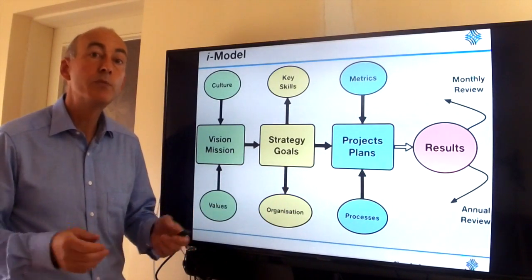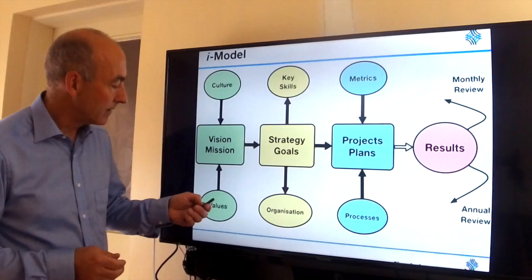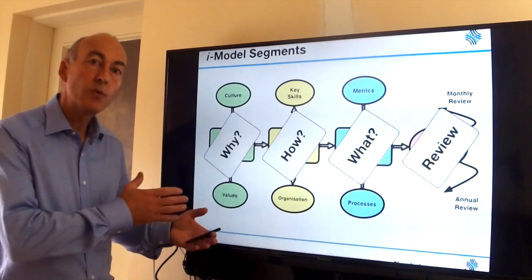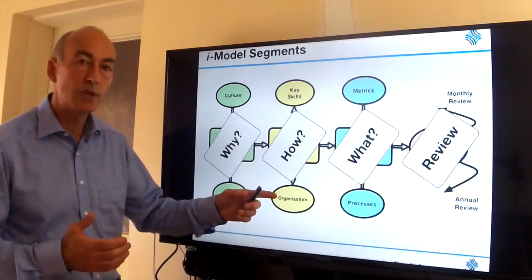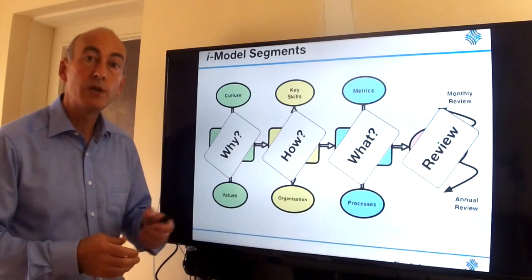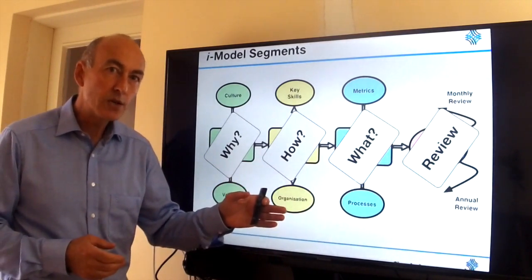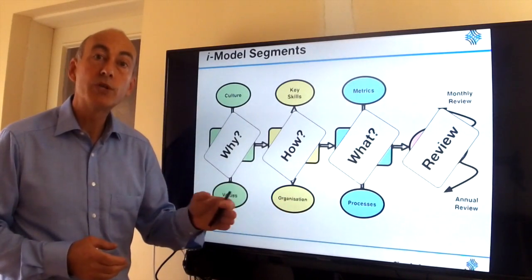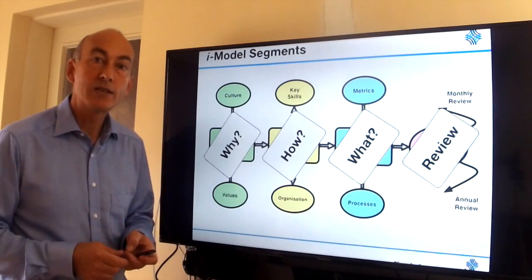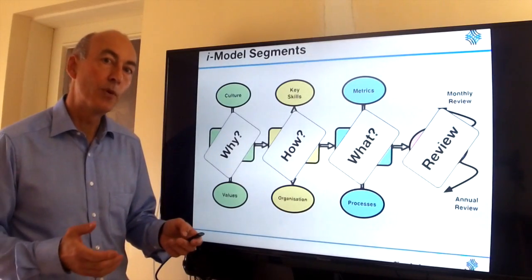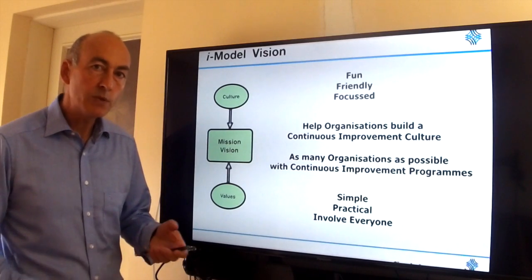Let's start by understanding what these segments mean. There are really four parts: we start off with why — the purpose behind everything — and people need to know why before they can move on to how, which covers the methods we're going to use to implement improvements. Then we get into the detail of what we're actually going to do, since improvement is drawn project by project, and finally we review and learn from all of that so we can improve our improvement program going forward.